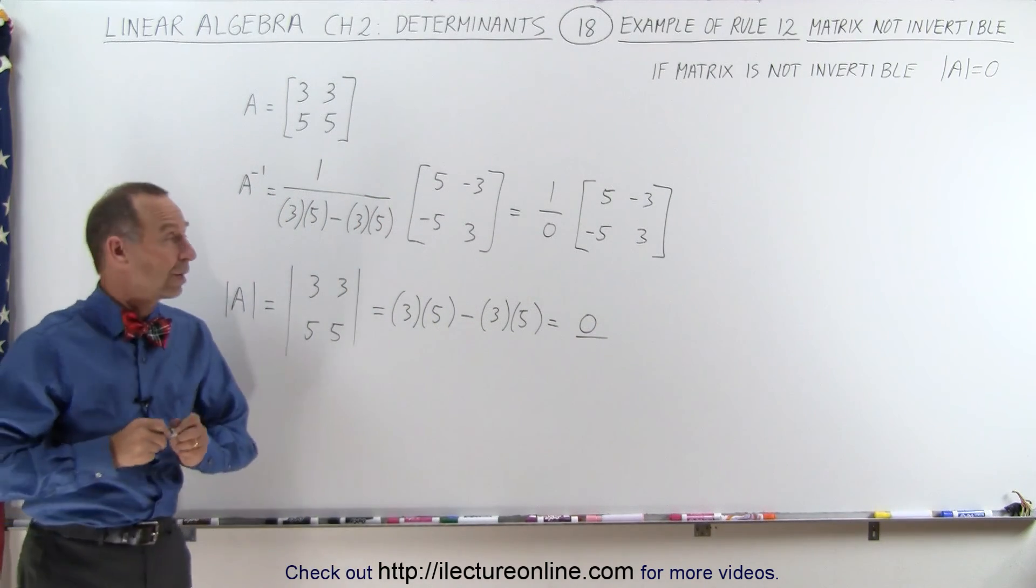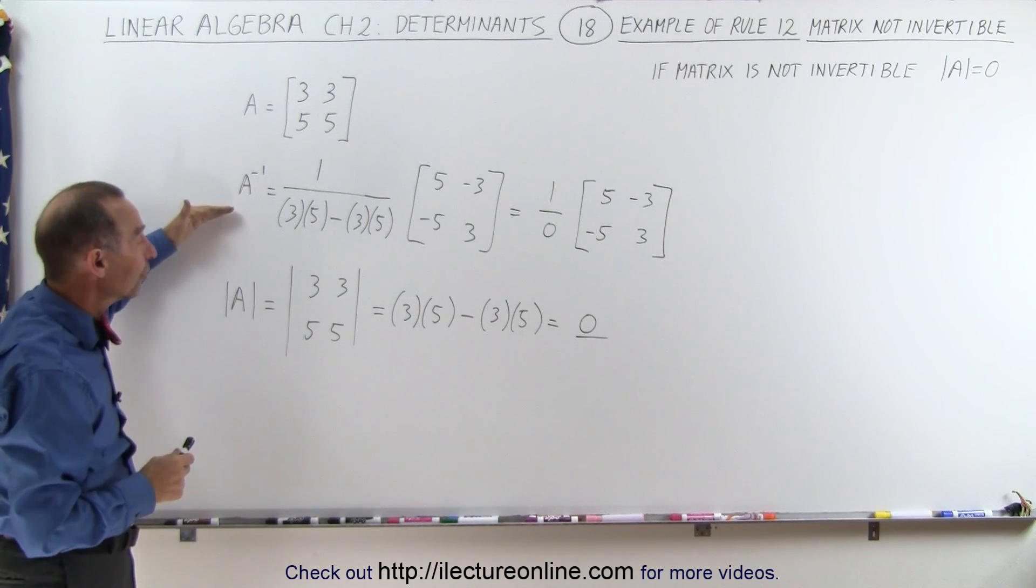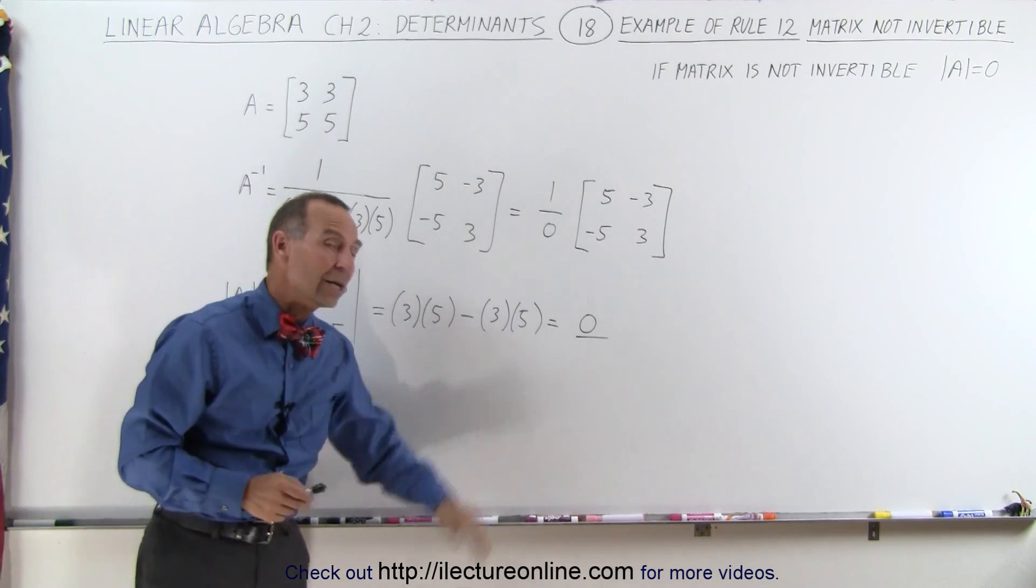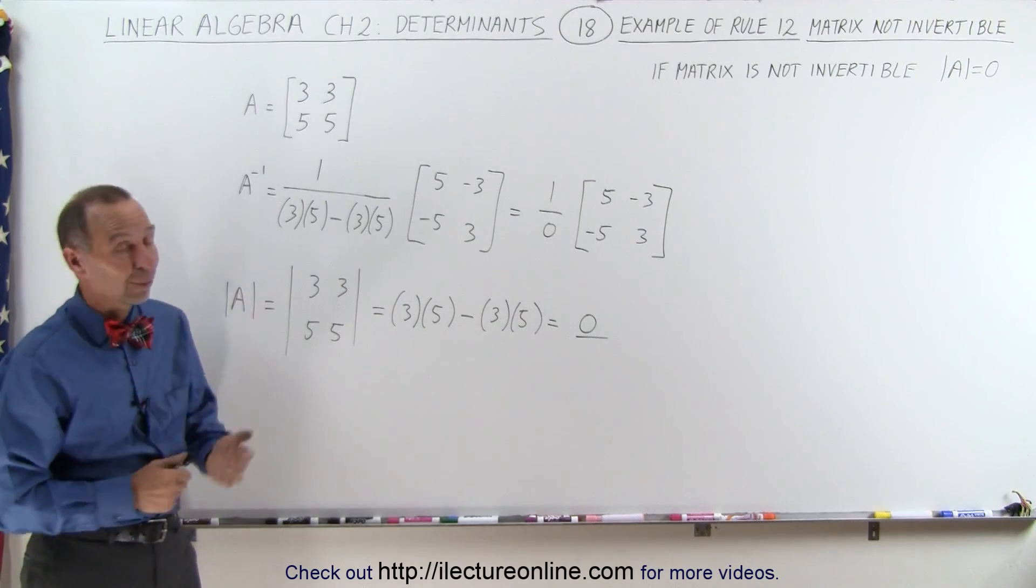So here's a good example where if the matrix does not have an inverse the determinant of the matrix will equal 0 and that's rule number 12.